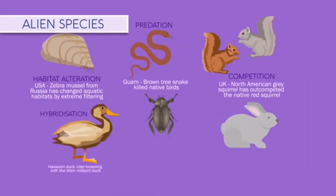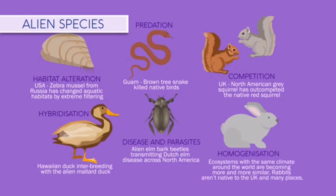A huge impact to biodiversity is the introduction of alien species to habitats. In fact, it is estimated that there are 3,000 species in transit aboard any ocean-going vessel. Alien species cause a number of problems as they can grow very quickly.